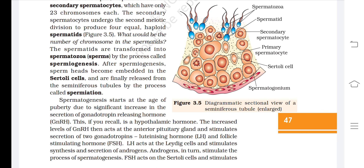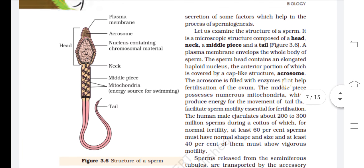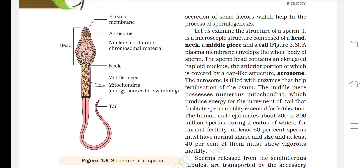FSH acts on the Sertoli cells and stimulates secretion of factors that help in spermiogenesis. A sperm is a microscopic structure composed of a head, neck, a middle piece, and a tail. A plasma membrane envelops the whole body. The sperm head contains an elongated haploid nucleus, the anterior portion of which is covered by a cap-like structure called the acrosome, filled with enzymes that help fertilization of the ovum.